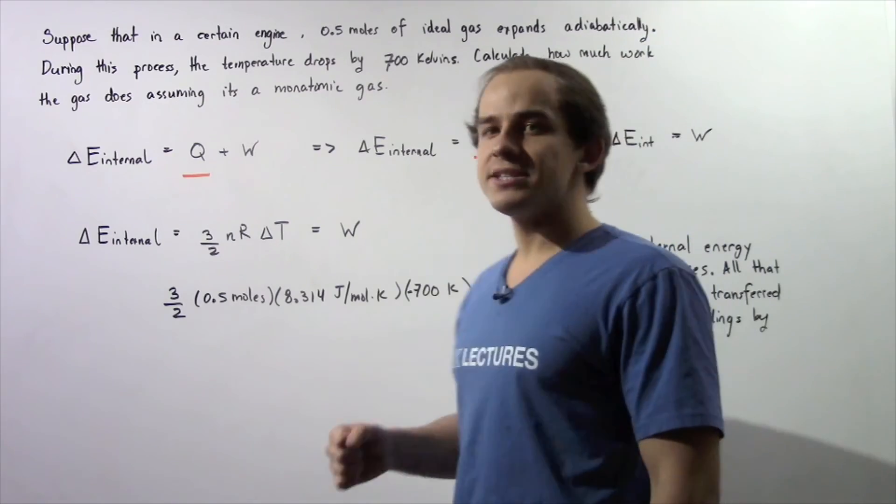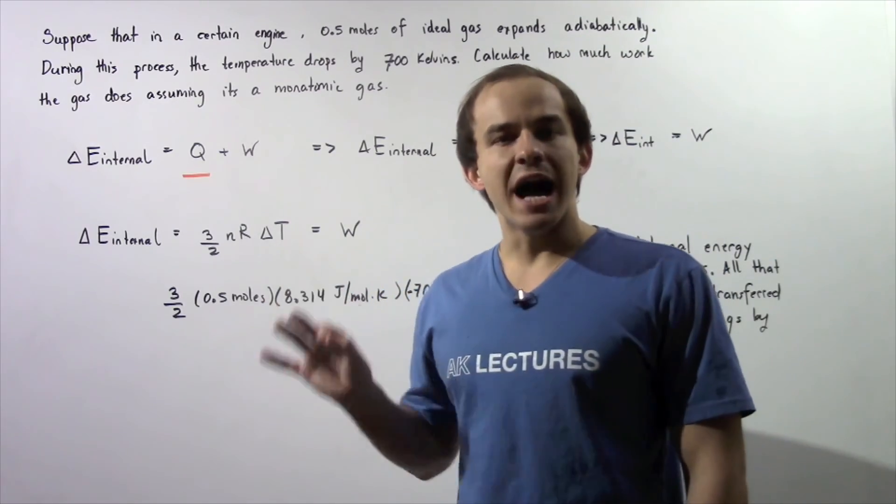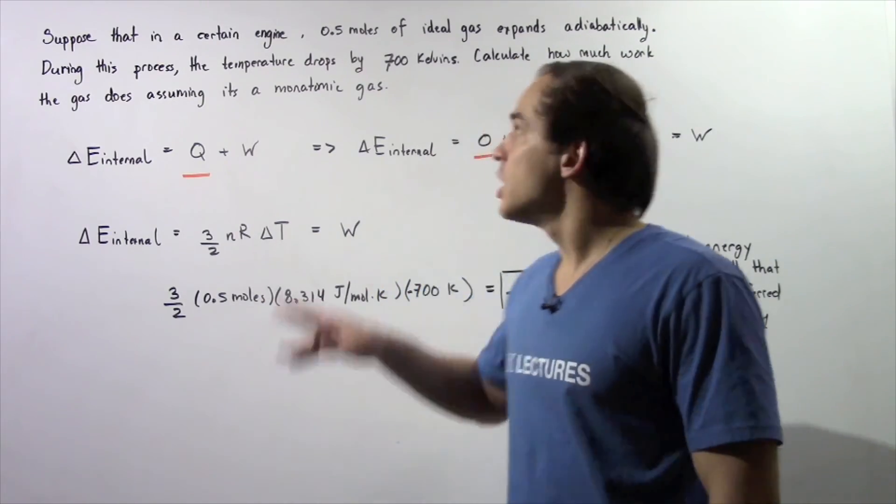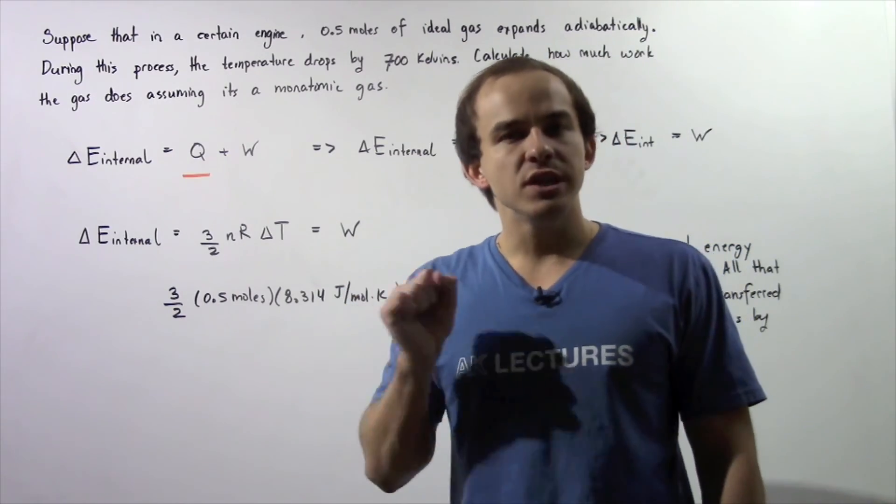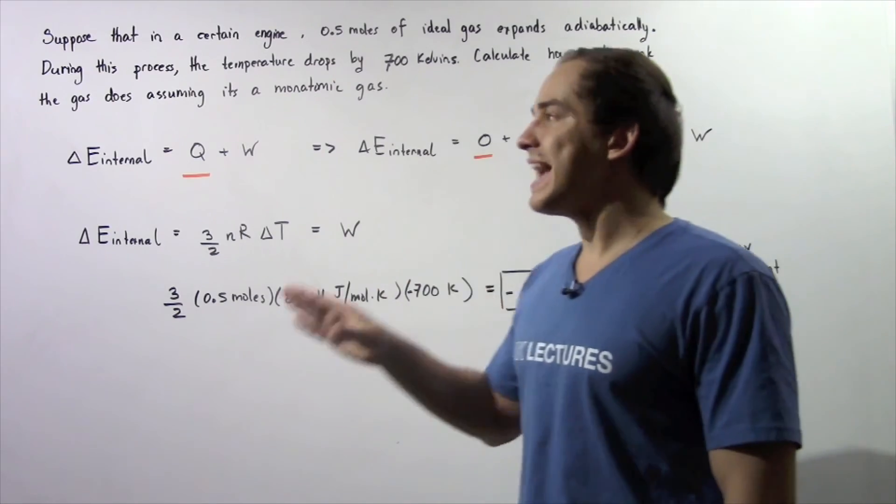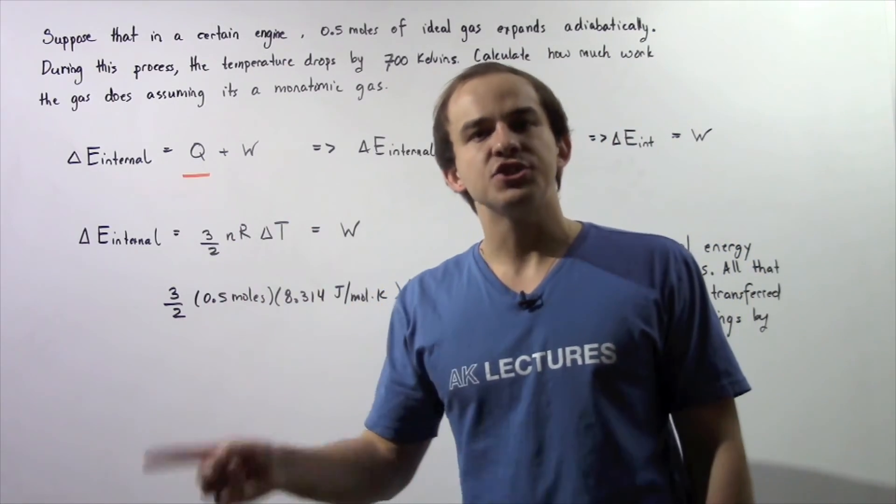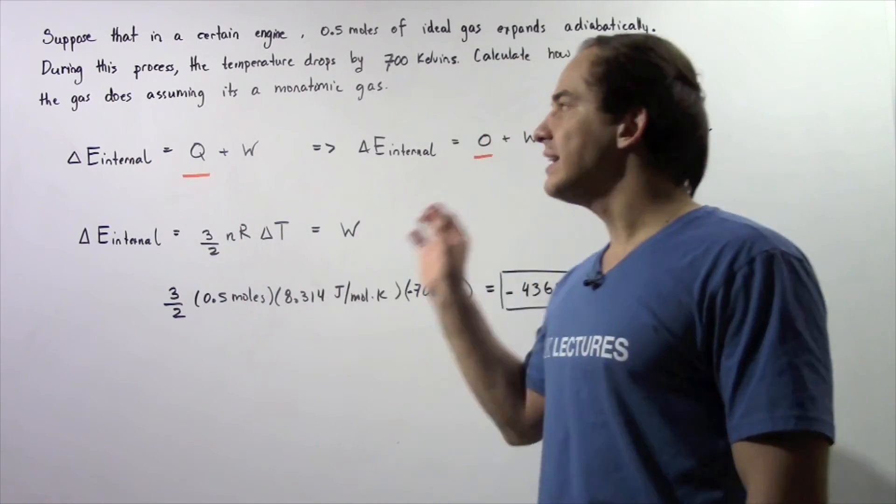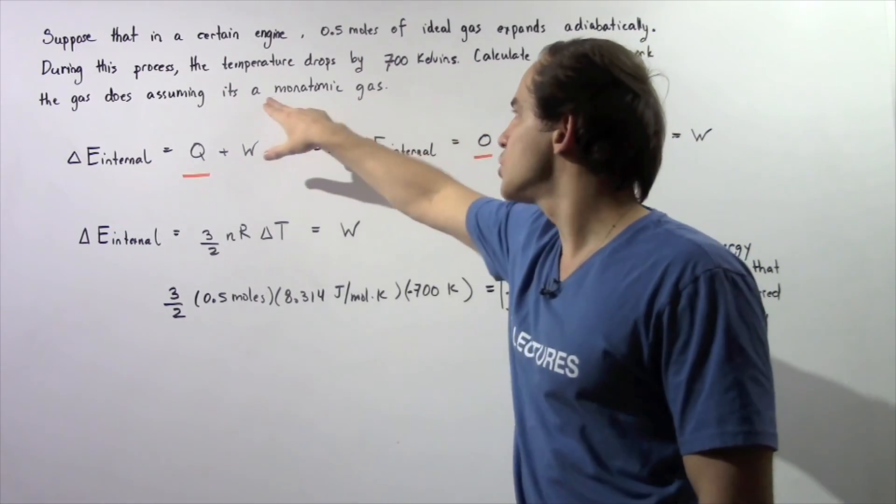During this process, the temperature of the ideal gas drops by 700 kelvins. Using this information, calculate how much work the gas does on the surroundings, assuming that the ideal gas is a monatomic gas.